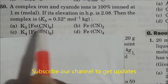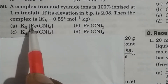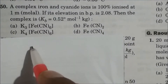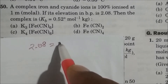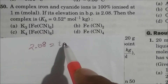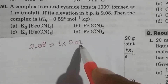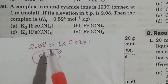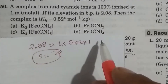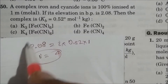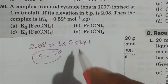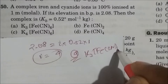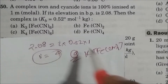A complex ion and cyanide ion solution is 100% ionized at 1 molar, with a boiling point elevation of 2.08. Using delta tb = i × kb × m, where kb = 0.52 and m = 1, we get i = 4. The complex with 4 ions is K3[Fe(CN)6] — potassium ferricyanide — giving 3 K+ + 1 complex ion = 4. The answer is A.